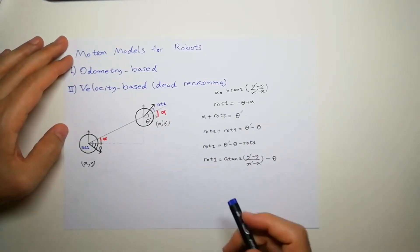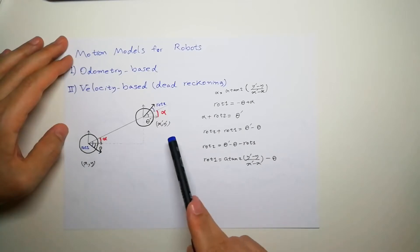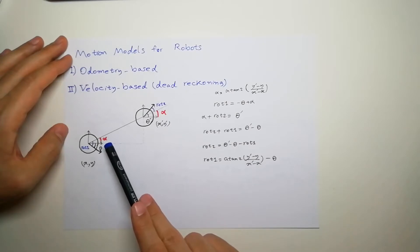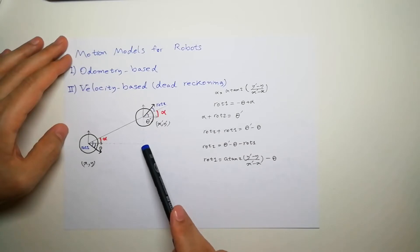So, alpha plus theta is rotation 1. This is something we can easily see from here, and this angle is actually the same angle here. Arc tangent of alpha is equal to delta y over delta x.